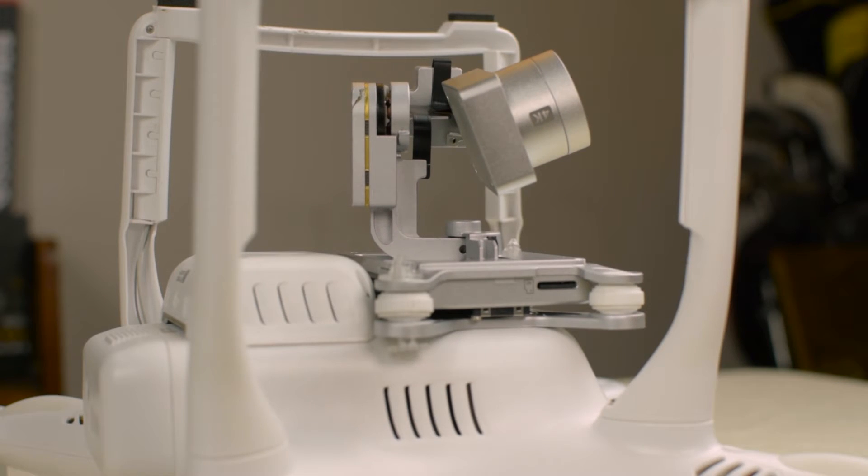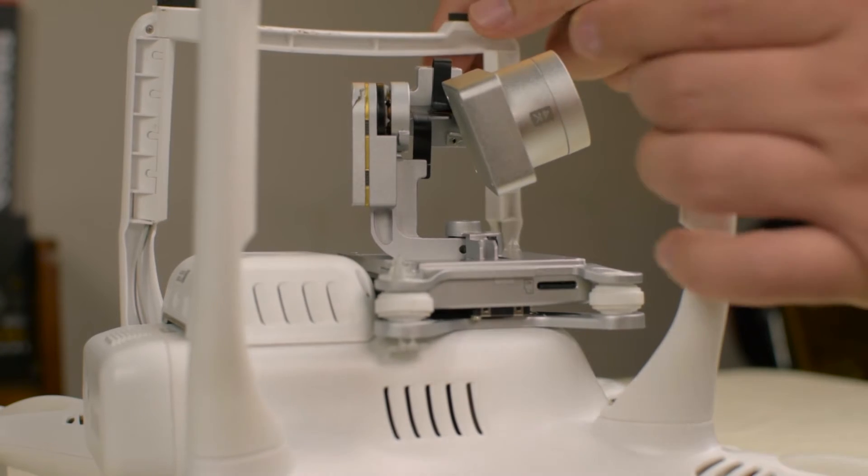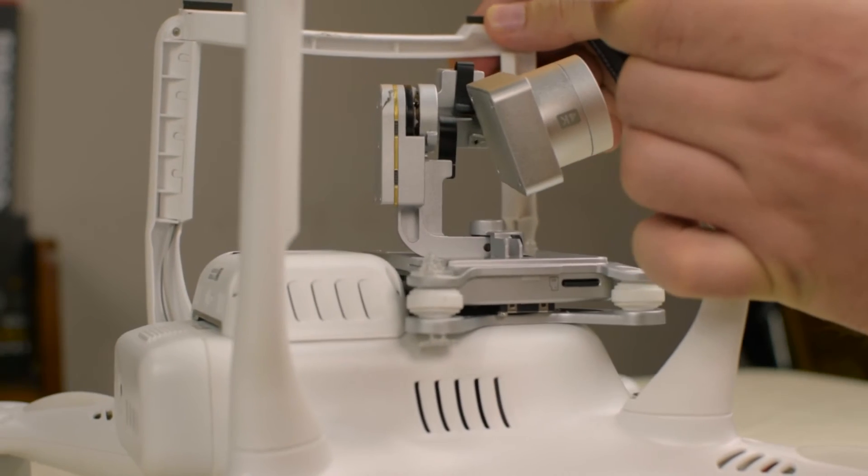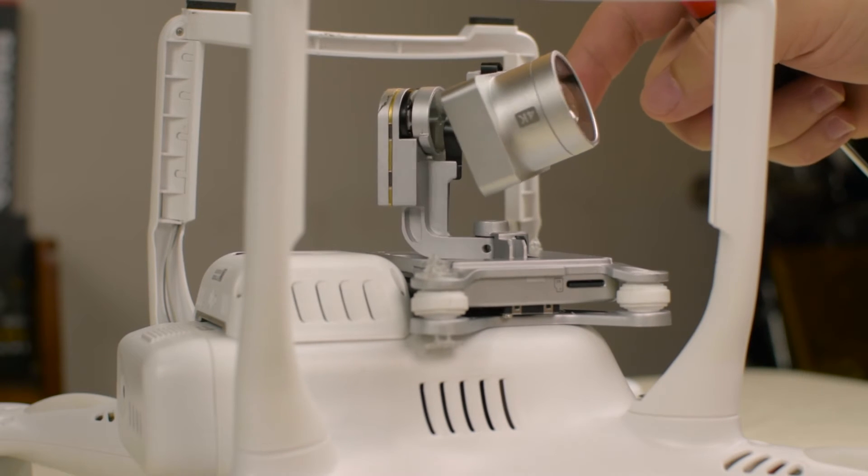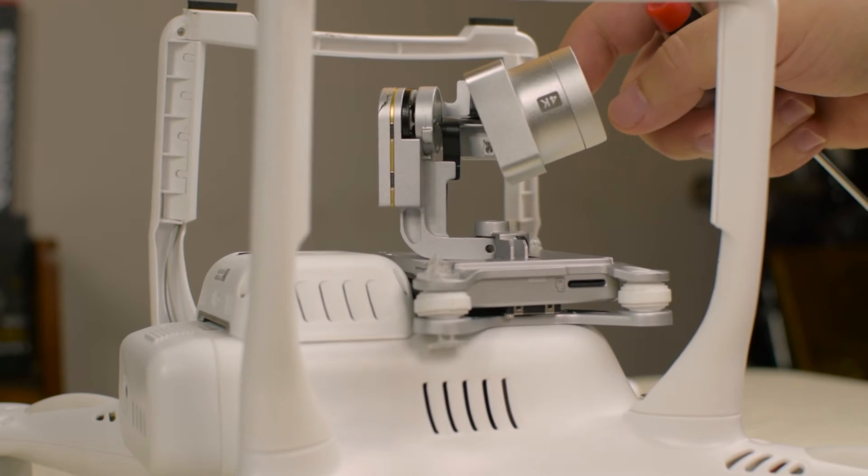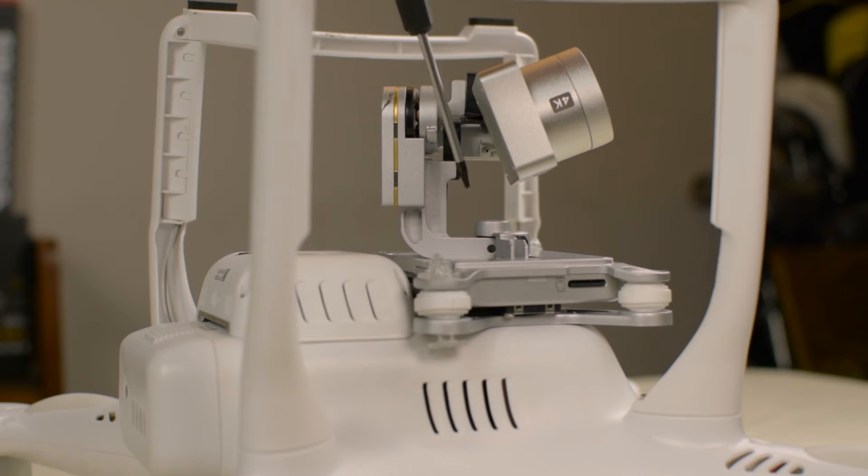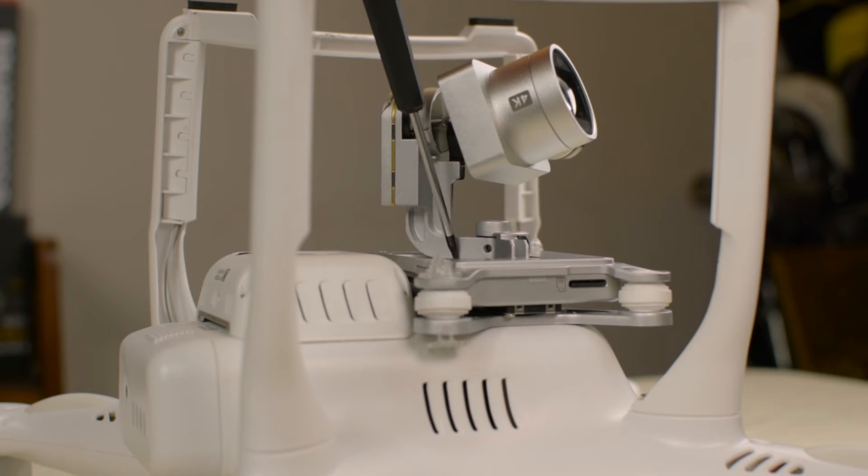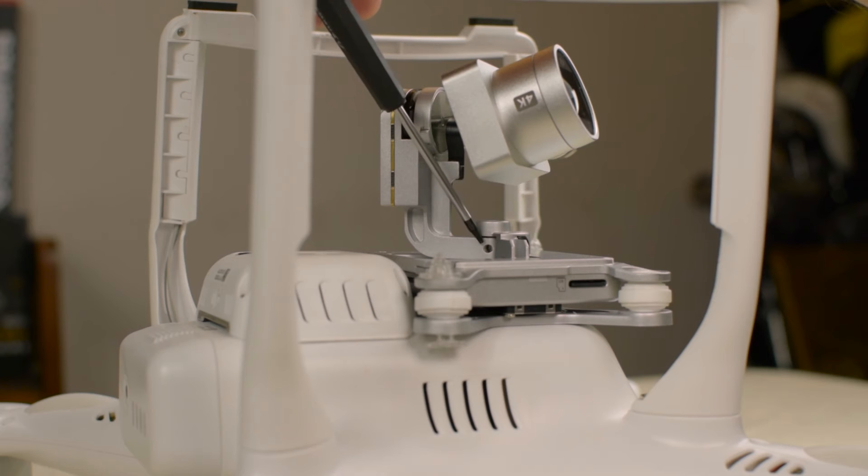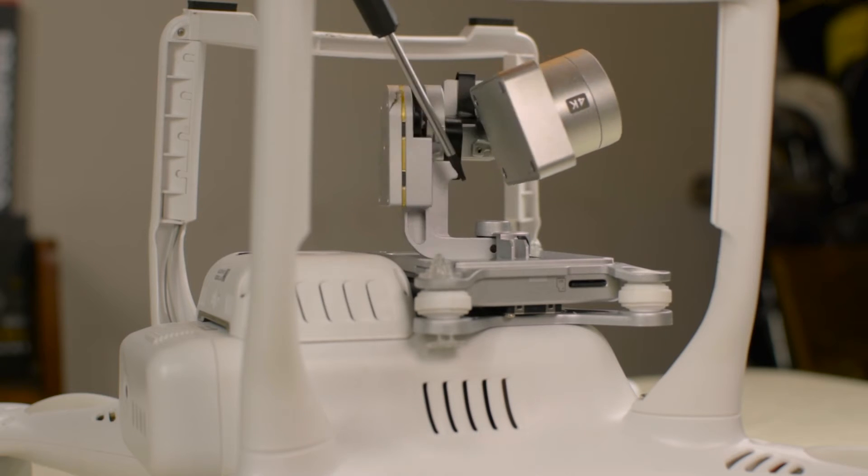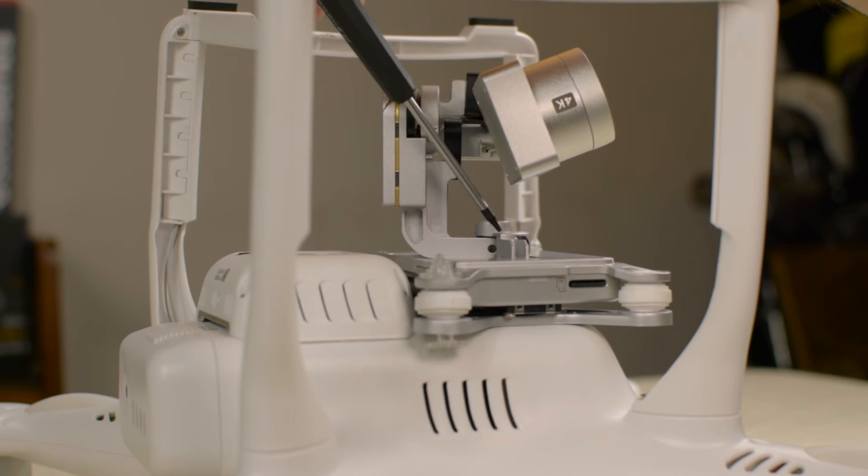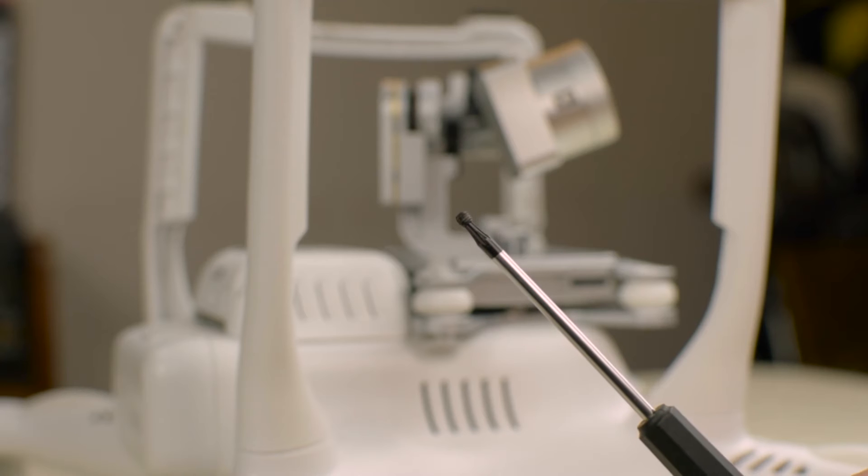This is the set screw that you need to be looking for. Right now this is flipped upside down. As you can see, right here, and so this hex screw is supposed to be holding this arm to a shaft inside this motor right here. A little bitty thing.